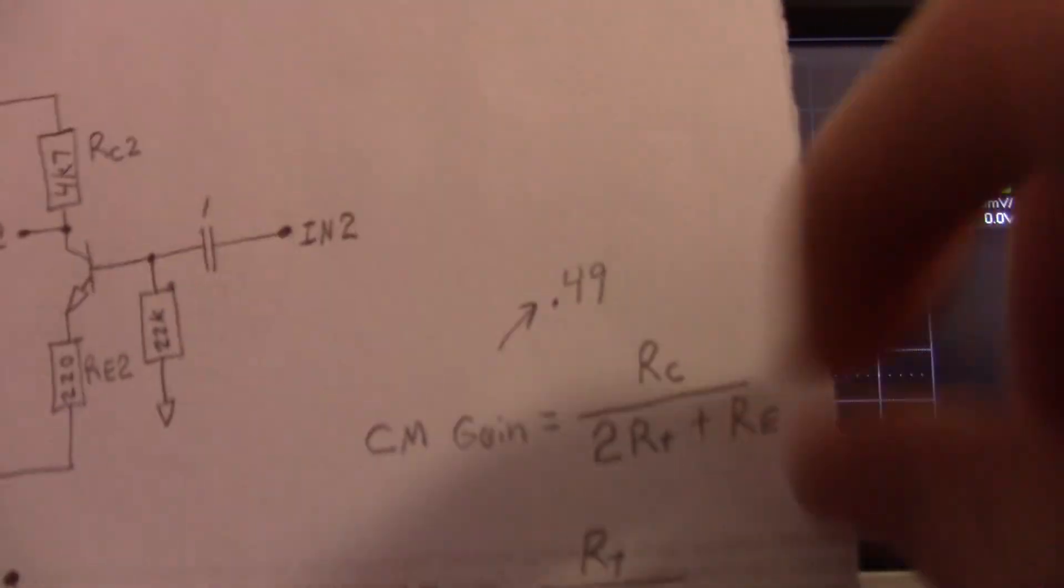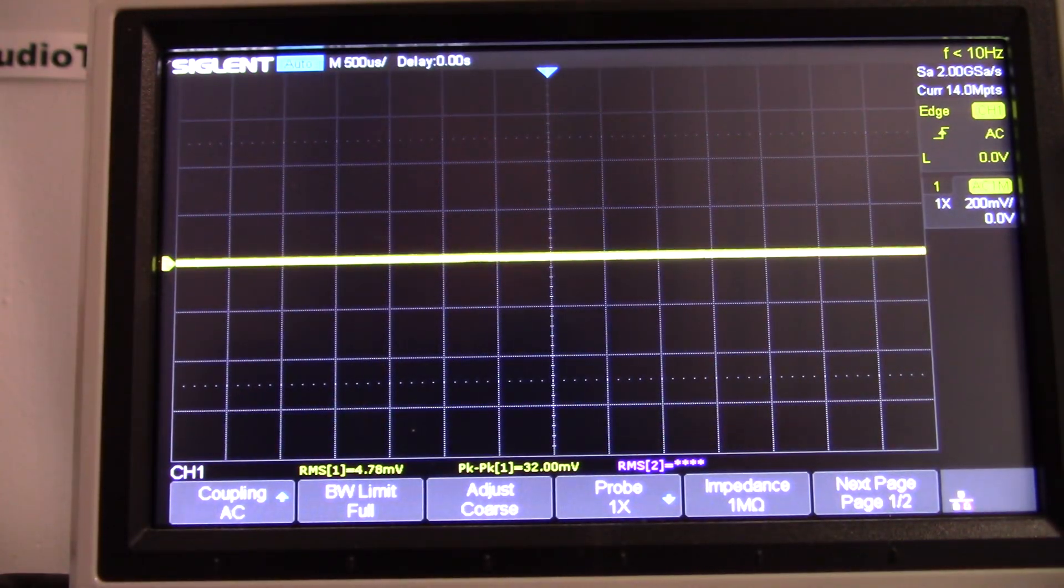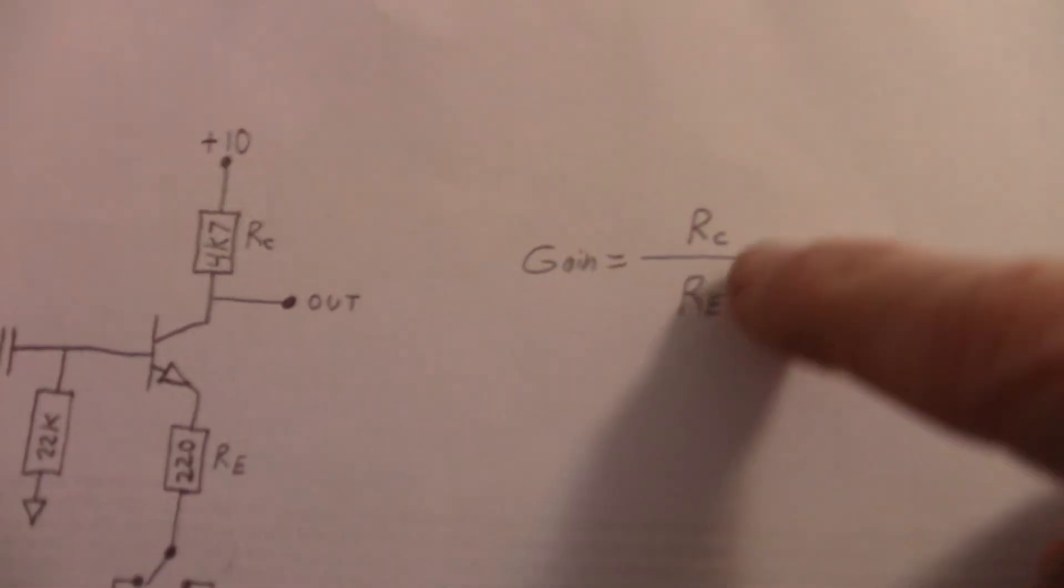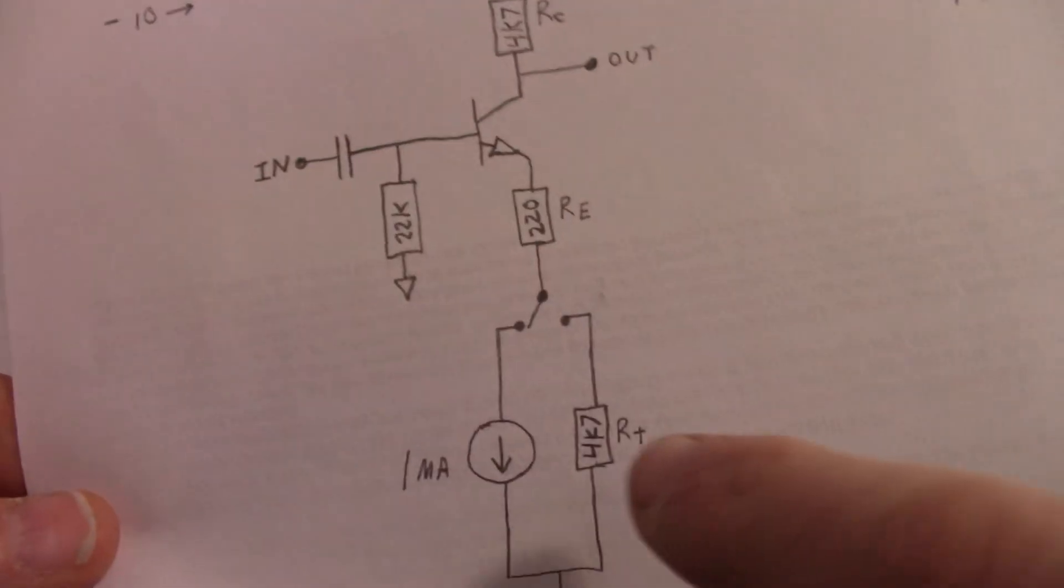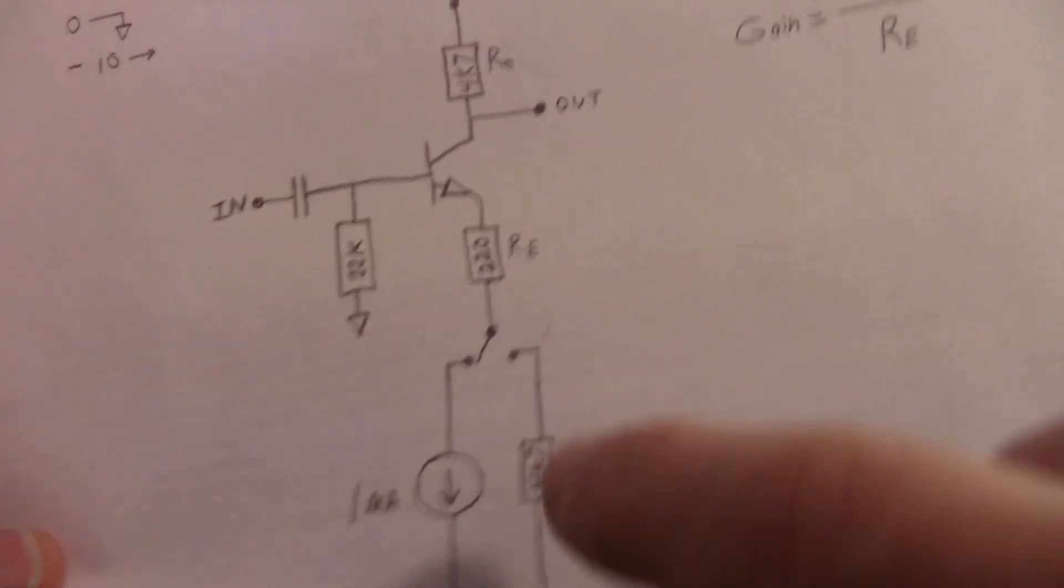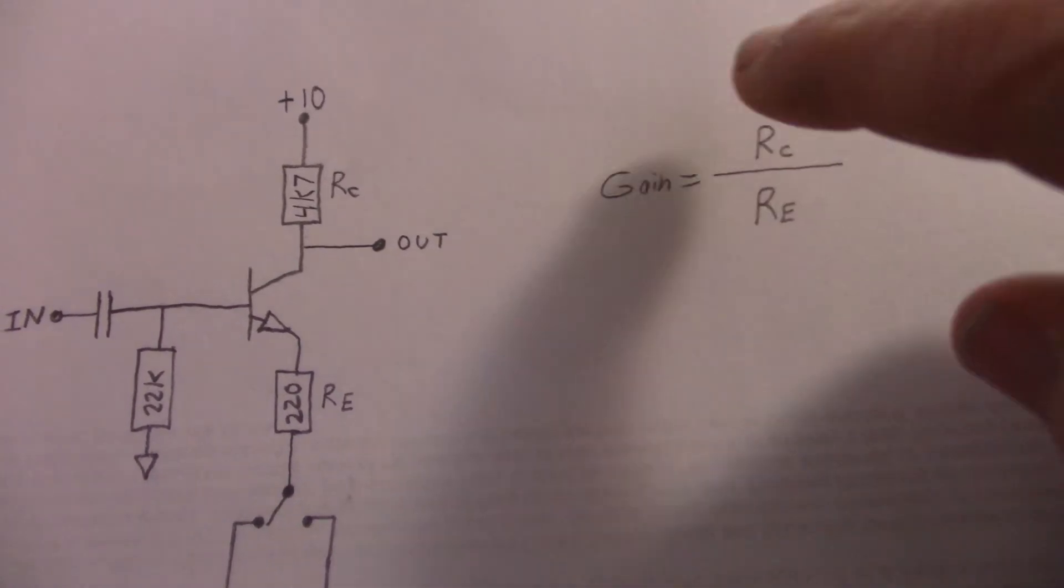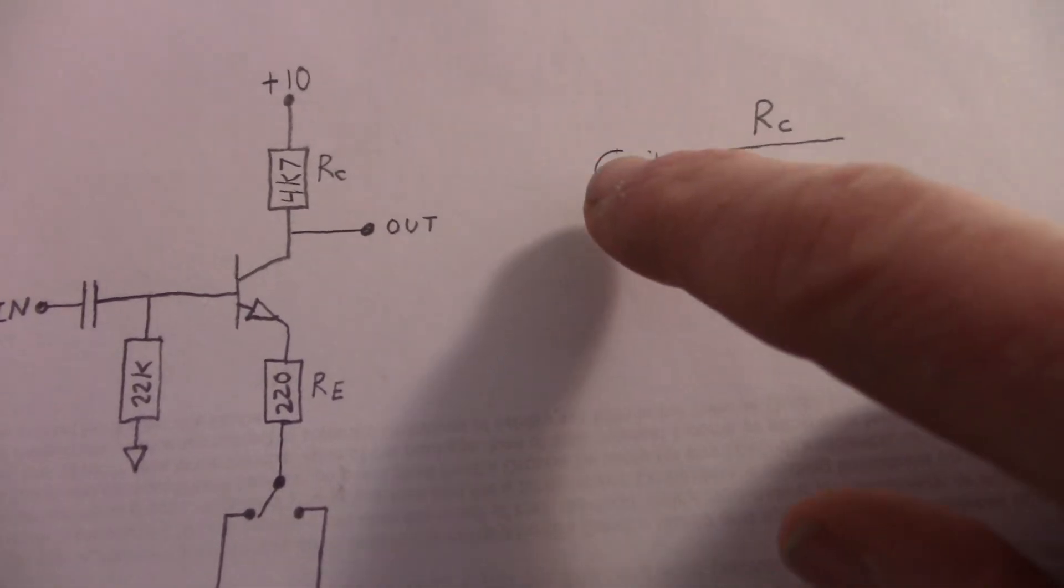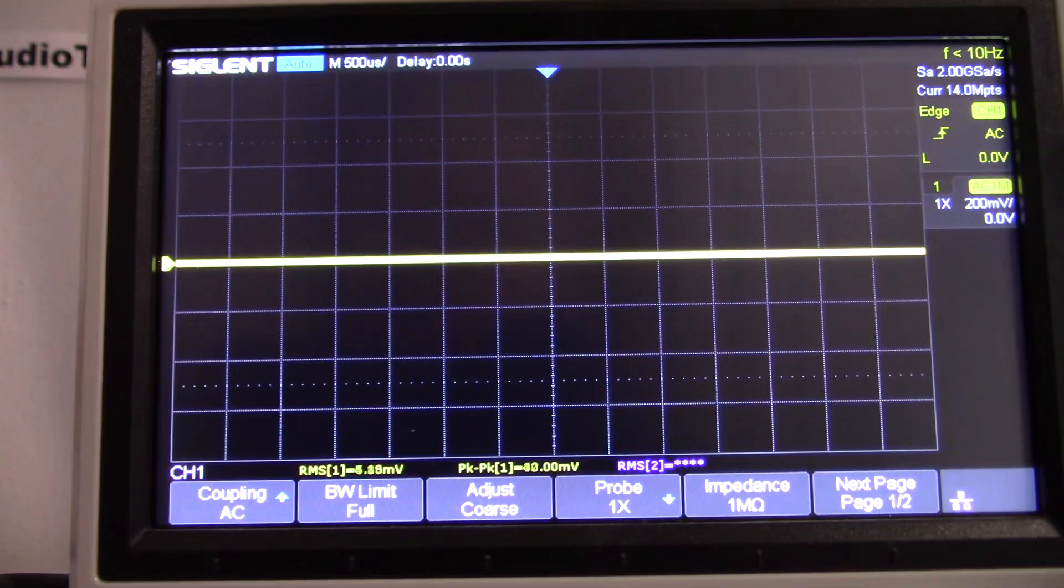Why is that happening? Well, if you remember our simplified equation. Simplified gain equation. Well, we have 4.7K here, but we have 4.7K plus 220. So our denominator is larger, slightly larger than the numerator. So this value is going to be less than 1, a little bit less than 1. So that's why we're seeing less than unity gain.